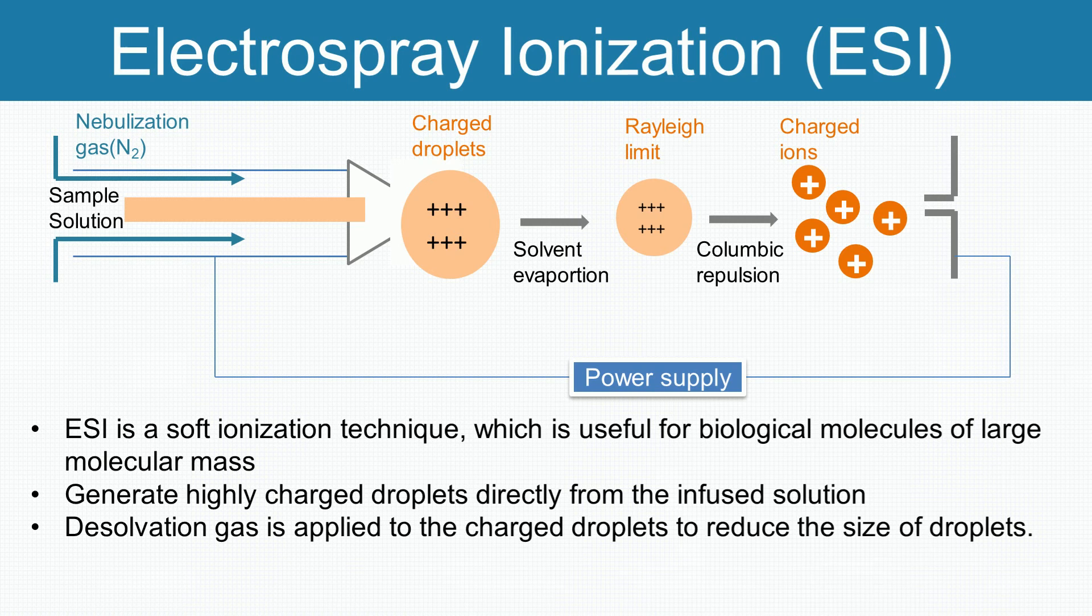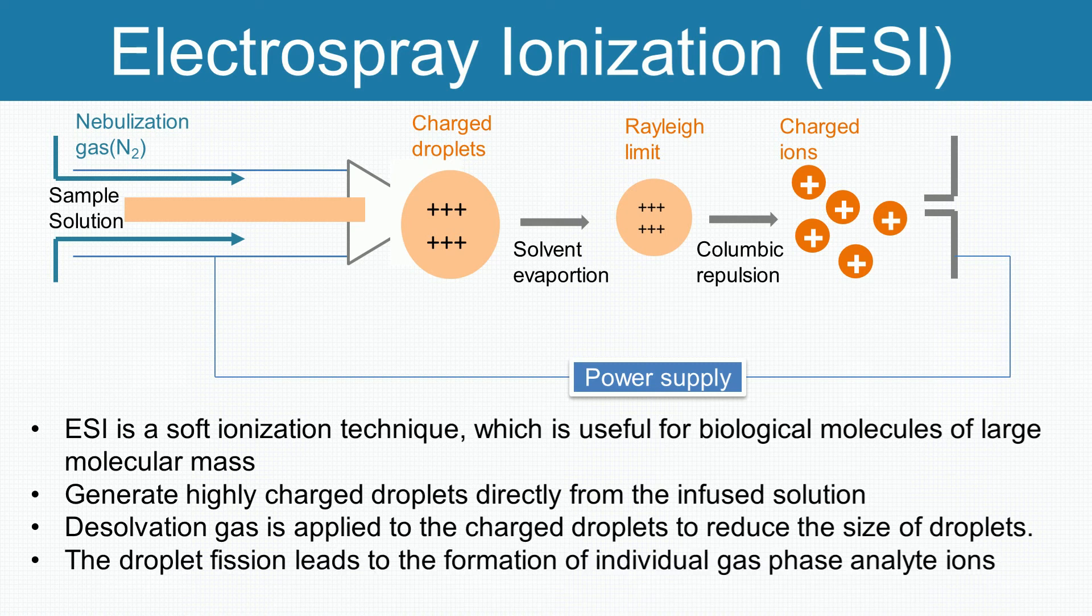And when droplets reach the critical point, known as Rayleigh limit, the Coulombic repulsion between the charges present in the droplet causes the droplets to form individual gas phase analyte ions. Finally, the ions are guided into a mass analyzer.